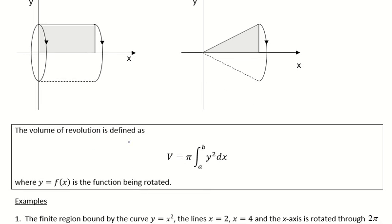So the volume of revolution is defined as the volume is equal to pi times the integral between a and b of y squared dx.